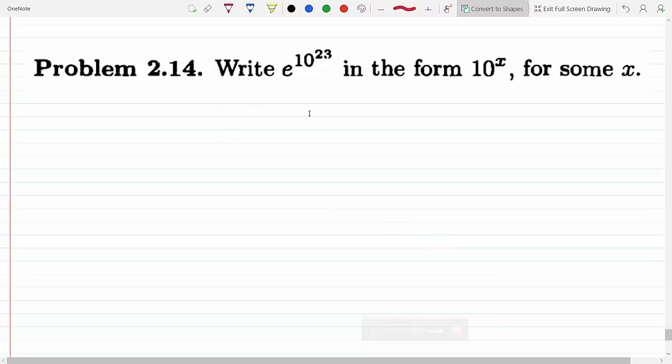This is another simple problem that explores the properties of exponentials and logarithms to manipulate large numbers, as we will attempt to do in this chapter dealing with the multiplicity of very large systems. So here it says write e^(10^23) in the form 10^x for some x.